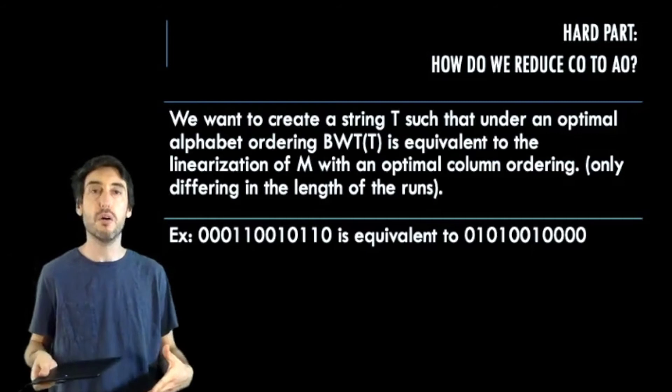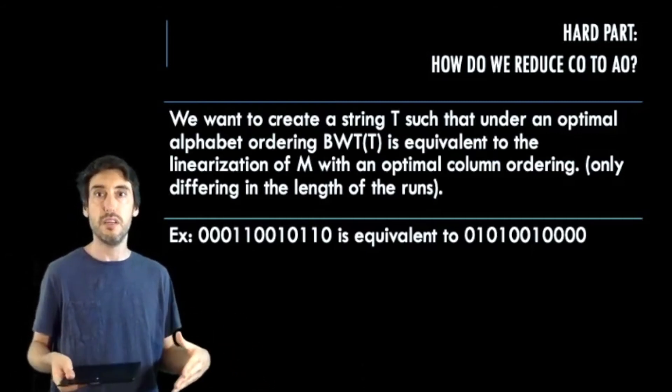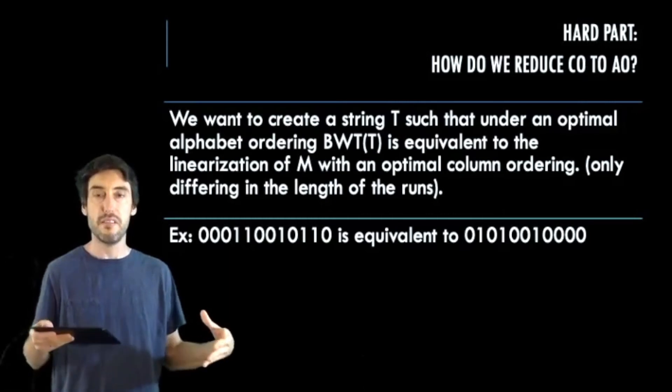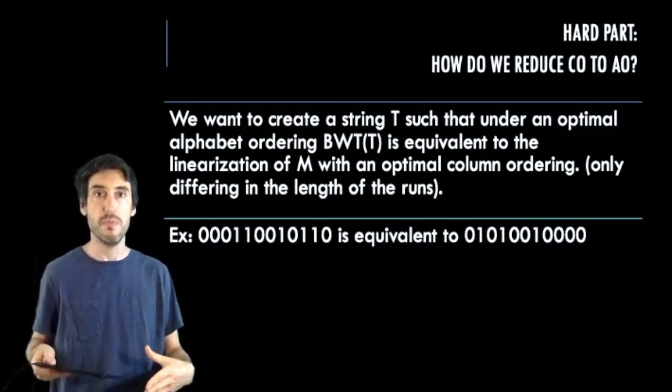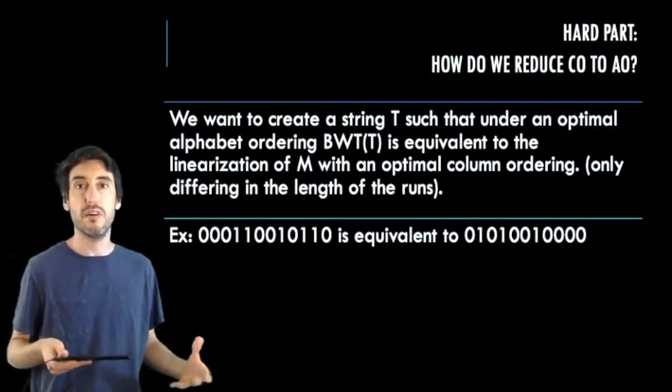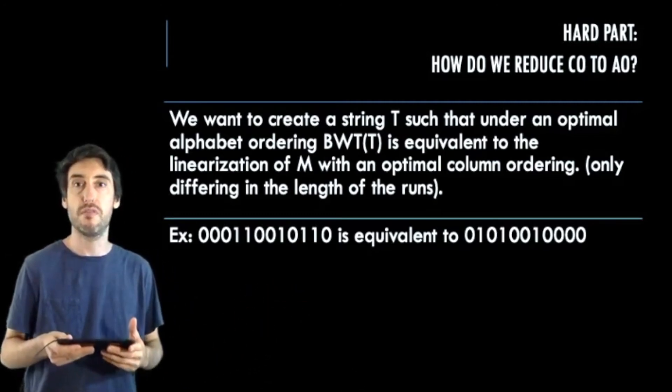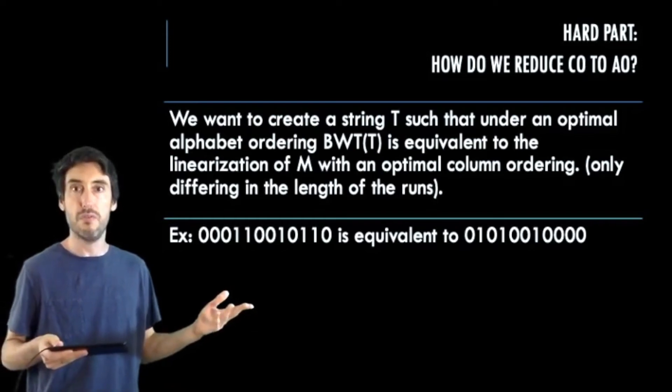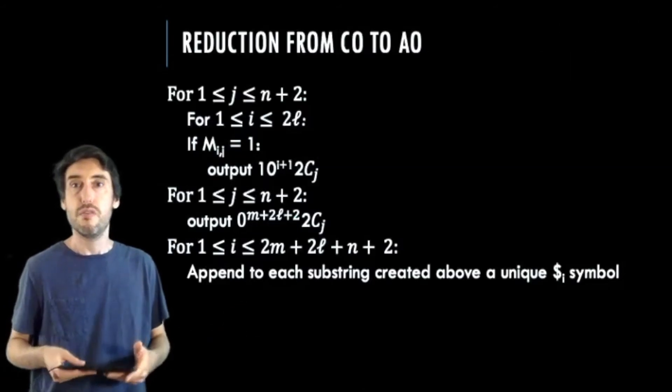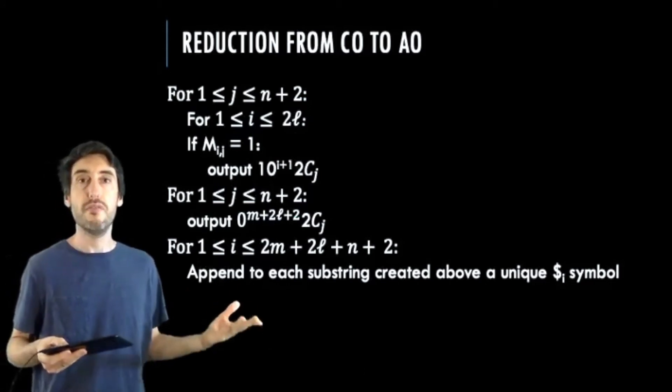Now the more interesting part is how do we go from column ordering to alphabet ordering? Now our aim will be to create a string T such that in any reasonable ordering of the symbols, there's a substring of T that is the same as the linearization of the matrix M. That is up to the length of the runs, since the length of the runs have no real effect on our solution. And this example at the bottom demonstrates two strings that are equivalent for our purposes. You can see the number of zeros or ones in a run is irrelevant for us.